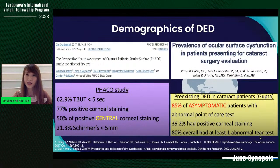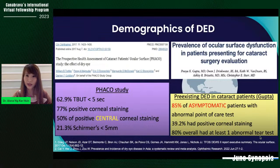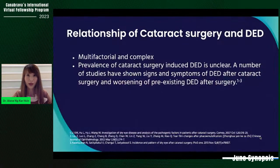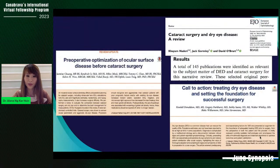Gupta et al. emphasized the disconnection between clinical signs and patient-reported symptoms in preoperative cataract assessments. 85% of asymptomatic patients had abnormal point-of-care tests, and overall 80% had at least one abnormal tear test. Studies have shown signs and symptoms of dry eye disease after cataract surgery and worsening of pre-existing dry eye after surgery. Some studies also emphasized the importance of optimizing ocular surface disease before cataract surgery for successful outcomes.